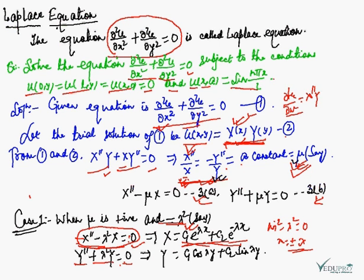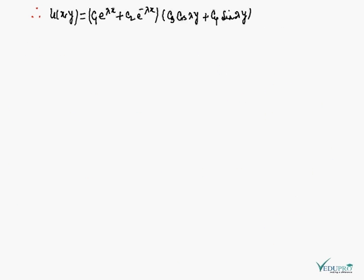Solving the Y equation, m = ±λi, so Y = c₃cos(λy) + c₄sin(λy). Therefore the general solution is u(x,y) = [c₁e^(λx) + c₂e^(−λx)] · [c₃cos(λy) + c₄sin(λy)]. Now we apply the boundary conditions.